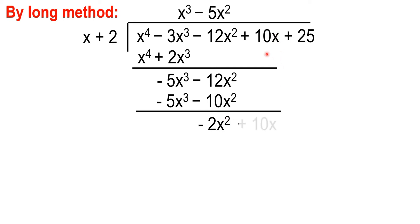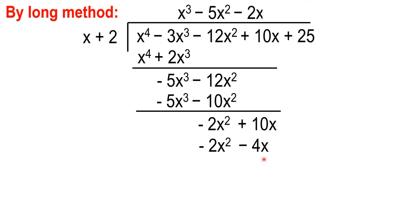Let us bring down the positive 10x. Then, negative 2x squared divided by x is negative 2x. Let's multiply: negative 2x times x is negative 2x squared. Negative 2x times 2 is negative 4x. Subtract. We have 10 minus negative 4, which gives us 14x.